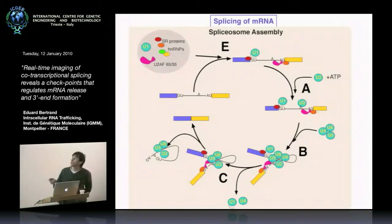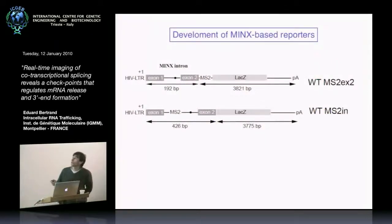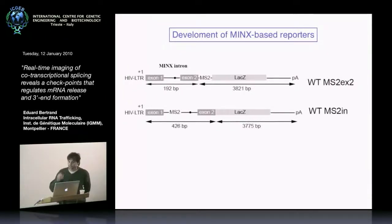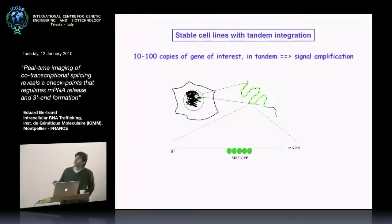One of the major questions in the field is how you make the spliceosome at every cycle, and how you recognize the splice site — that is still unclear. The reporter we used is based on the Minx intron, an artificial intron derived from adenovirus known to splice very efficiently in vitro, which is why we use it in vivo. We made two reporter constructs: one with four MS2 sites in exon 2, and one with four MS2 sites within the intron to visualize the splicing reaction in living cells. We integrated this reporter in U2OS cells, selecting cells with many copies integrated in tandem to obtain a very bright transcription site with good signal for microscopy.